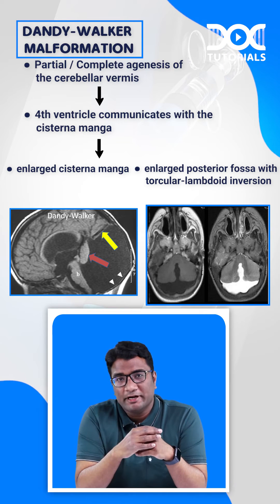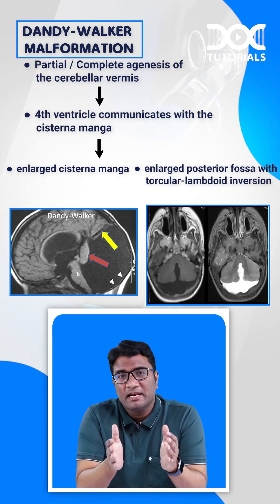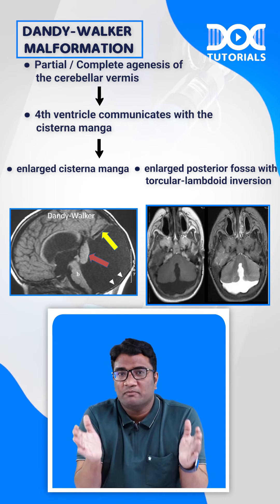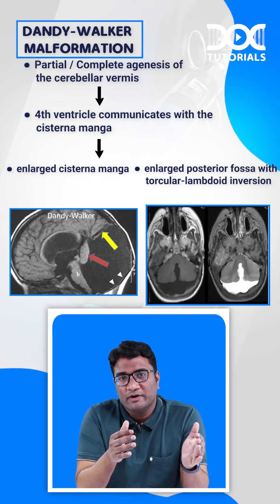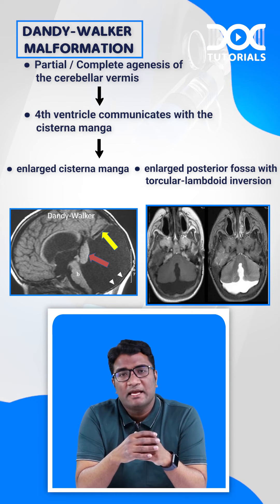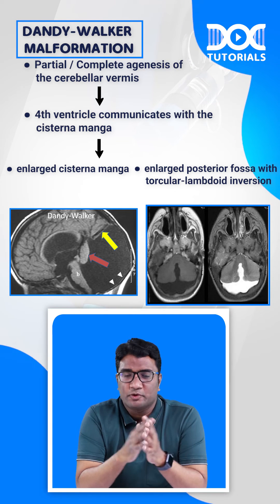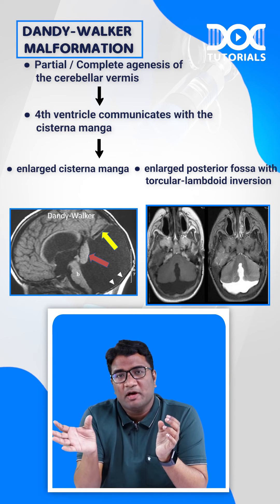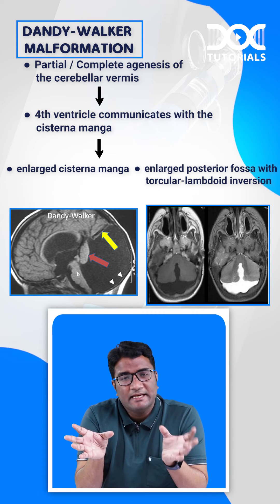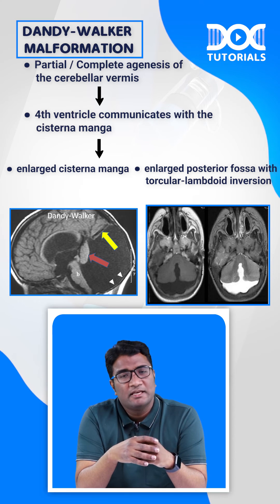This cerebellar vermis agenesis leads to torcular and lambdoid inversion. The fourth ventricle communicates with the cisterna magna, producing an enlarged cisterna magna and a large posterior fossa. In Chiari malformations we have a small posterior fossa, whereas in Dandy Walker malformation we have a large posterior fossa.